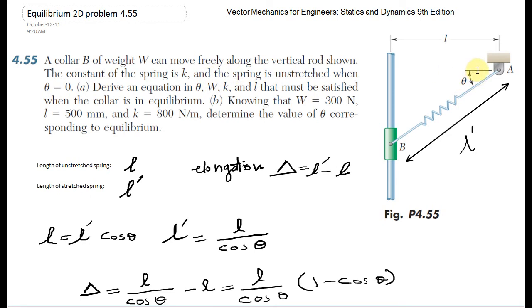We're going to find the equation between theta, W, and K for the position where the collar is stationary and doesn't move vertically. This problem is related to the equilibrium subject.